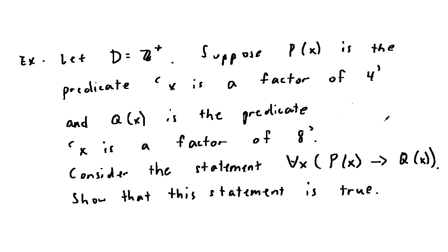Let's do another example. Let D be the set of all positive integers. Suppose P(x) is the predicate 'x is a factor of 4' and Q(x) is the predicate 'x is a factor of 8'. Consider the statement: for all x, P(x) entails Q(x). Show that this statement is true.